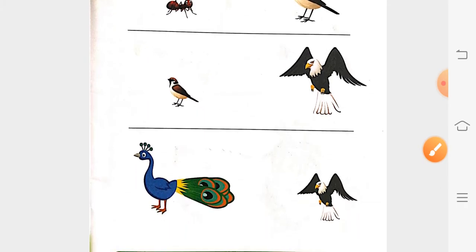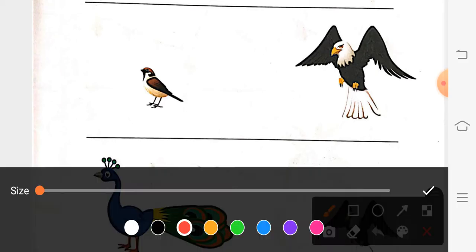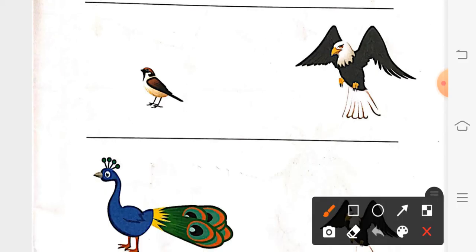Then the second one. There is a bird and an eagle. So what you are going to circle? Bird is big? No. Eagle is bigger. So we will circle eagle. Toh aapko eagle ko circle karna hai.